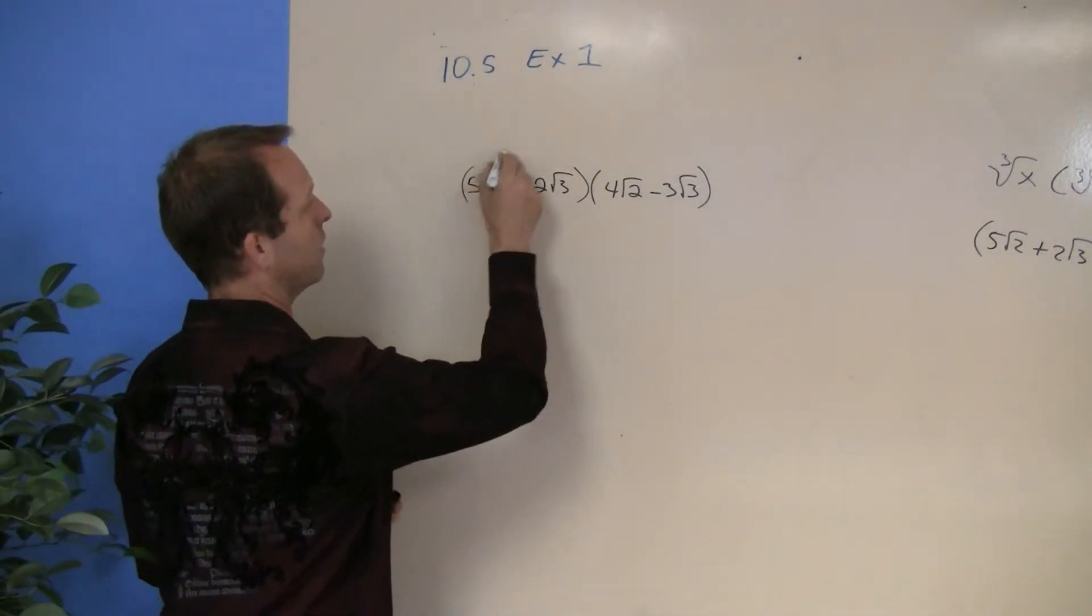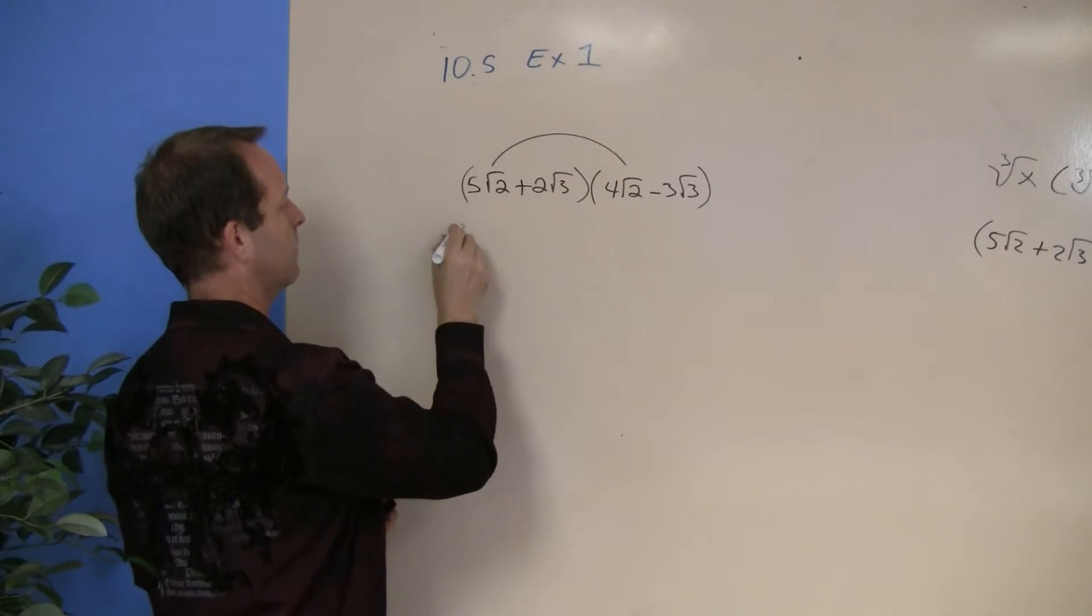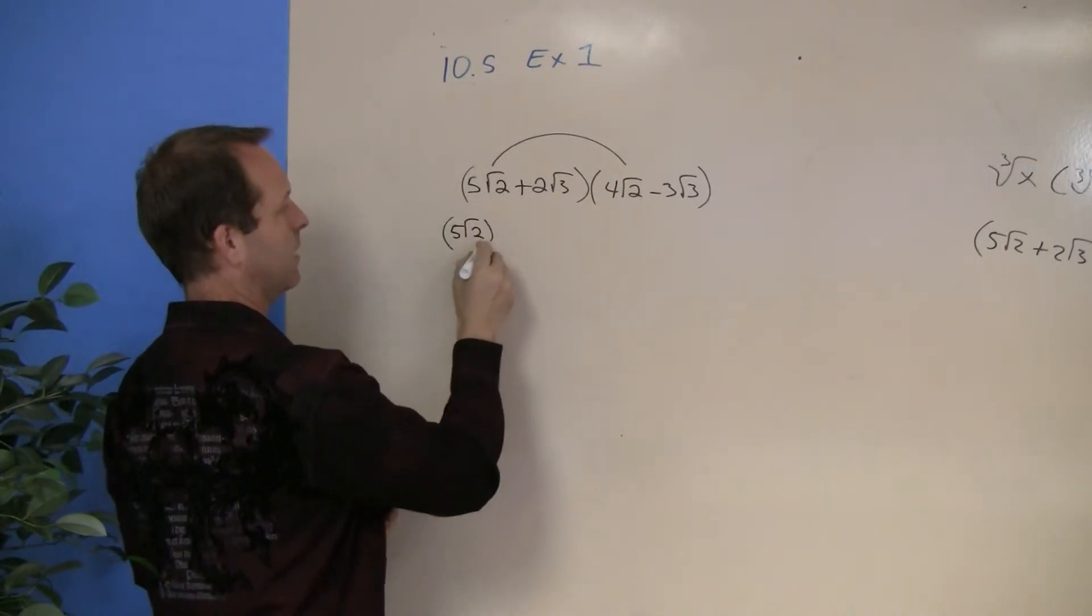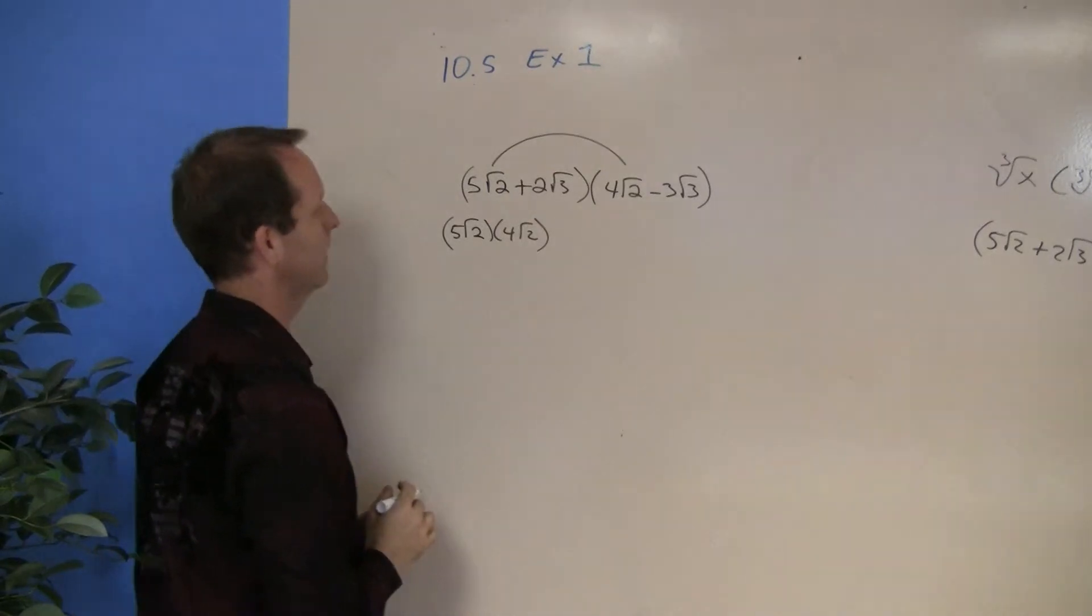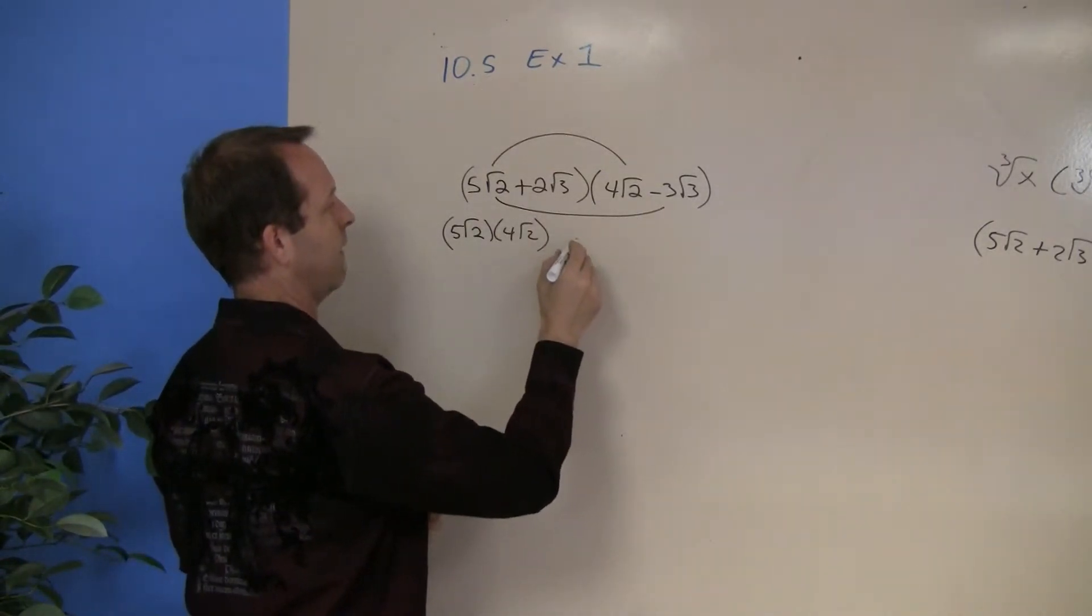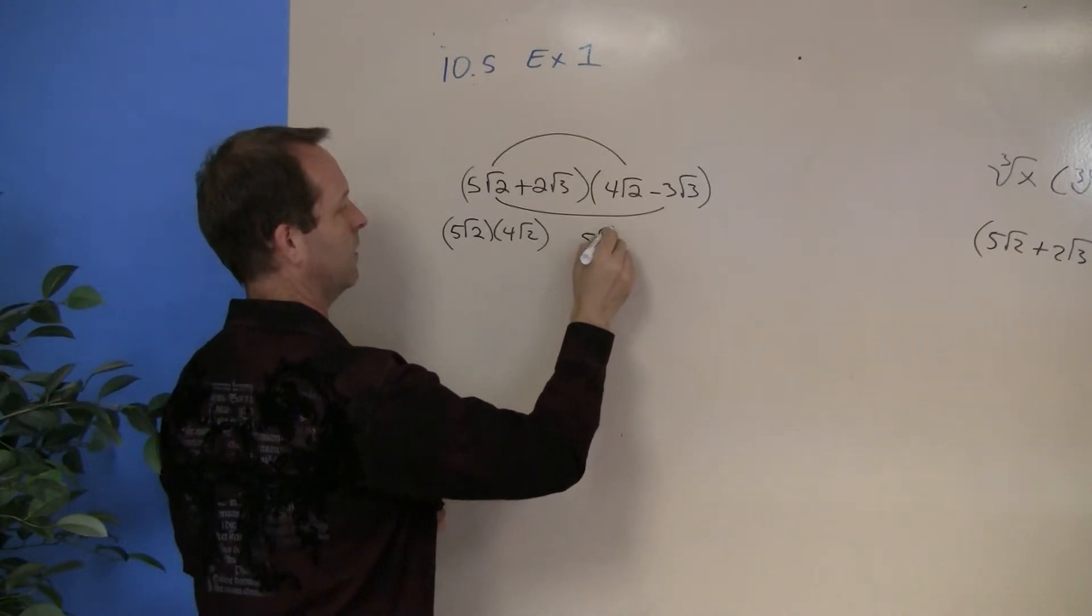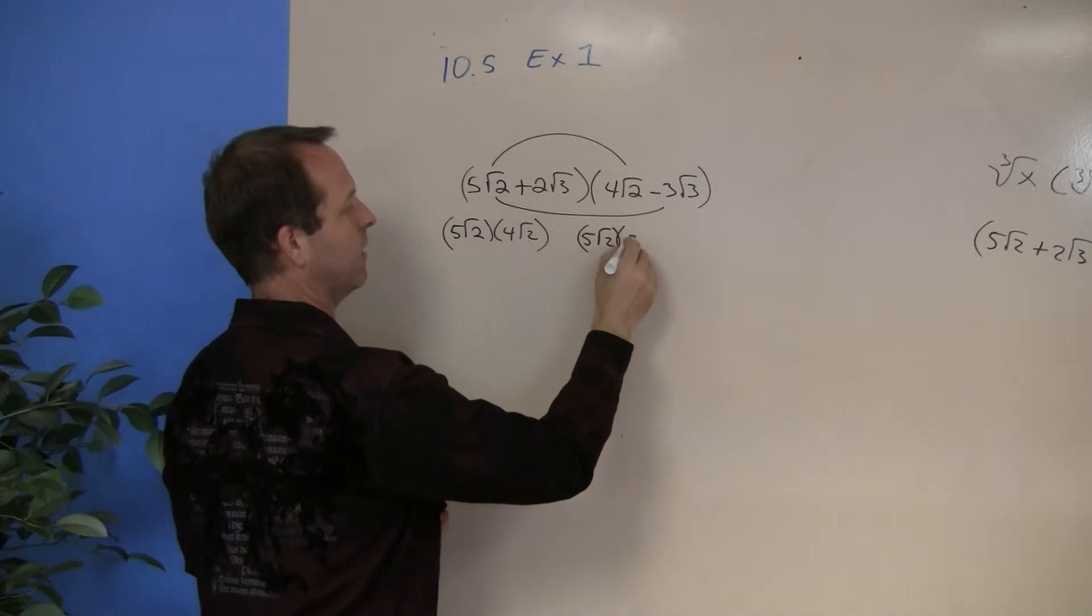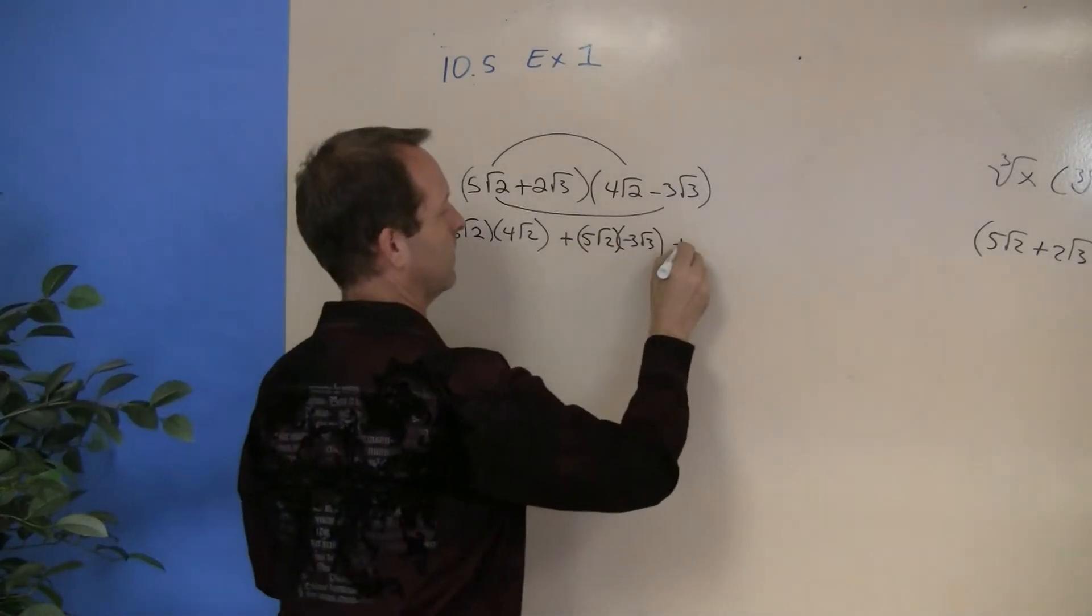5 root 2 times 4 root 2. The outer terms is a 5 root 2 times a negative 3 root 3.